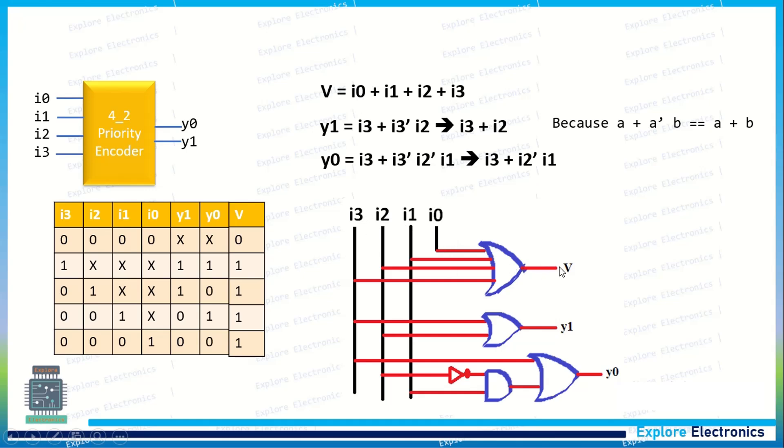Similarly, y1 and y0 to be implemented. i3 + i2, so this is i3, this is i2. One OR gate gives y1.